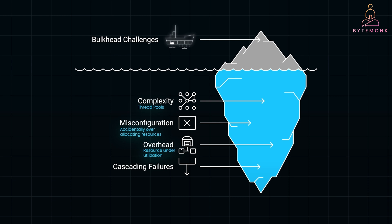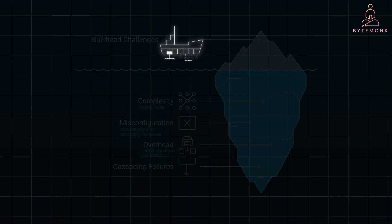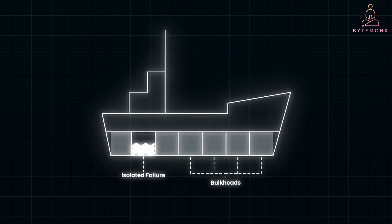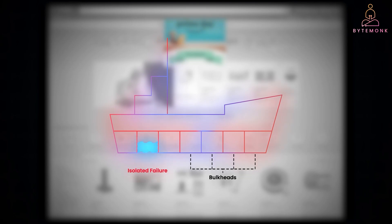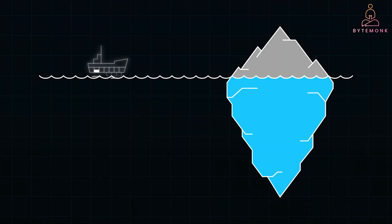While bulkheads can add complexity and require constant tuning, the trade-off is well worth it. By compartmentalizing your services and resources, you protect your critical systems from cascading failures and ensure better uptime and reliability, especially in high-traffic scenarios. Whether you are running a high-traffic microservices system or preparing for your next big sales event, the bulkhead pattern is a must for ensuring resilience and service uptime. Have you ever implemented the bulkhead pattern in your architecture? Share your experiences in the comments — I'd love to hear how it worked for you and what challenges you faced.